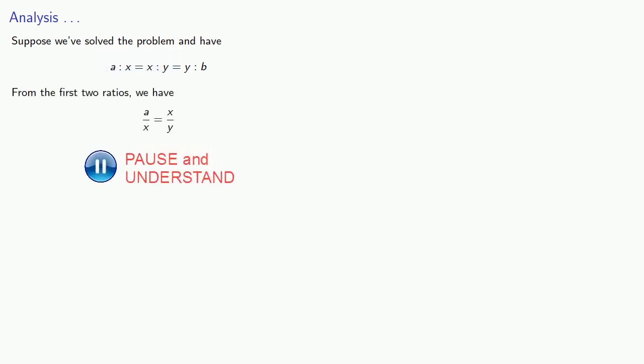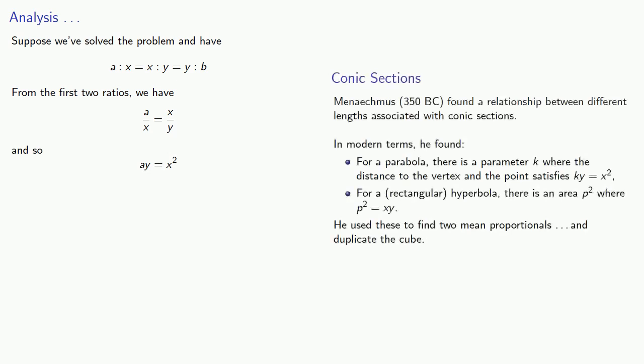So in this case, suppose we've already solved the problem and we've found our two mean proportionals x and y, so that a is to x as x is to y as y is to b. Now if we take a look at these first two ratios, we can read these as a over x equals x over y. And if we cross multiply, we get ay equals x squared, which tells us that x and y are the ordinates of a parabola. In other words, they correspond to some point on a conic section.